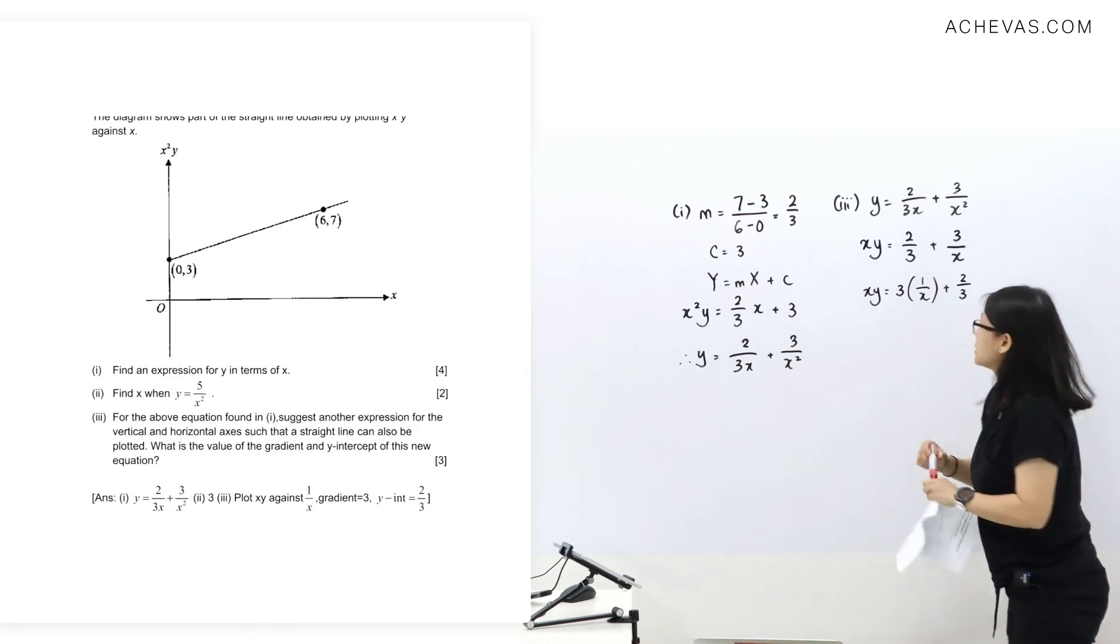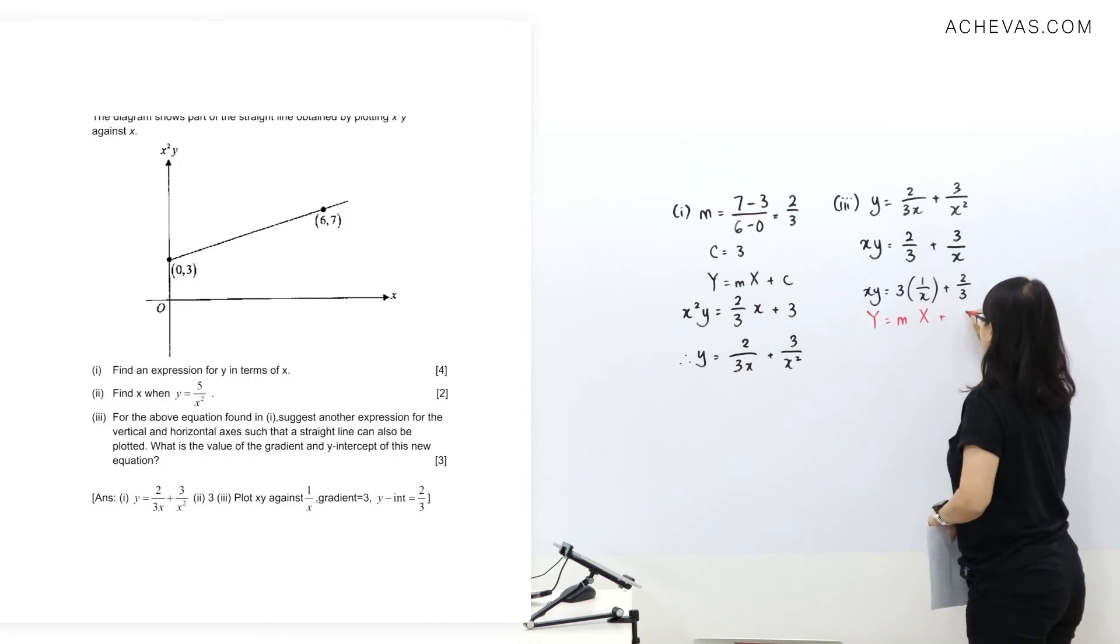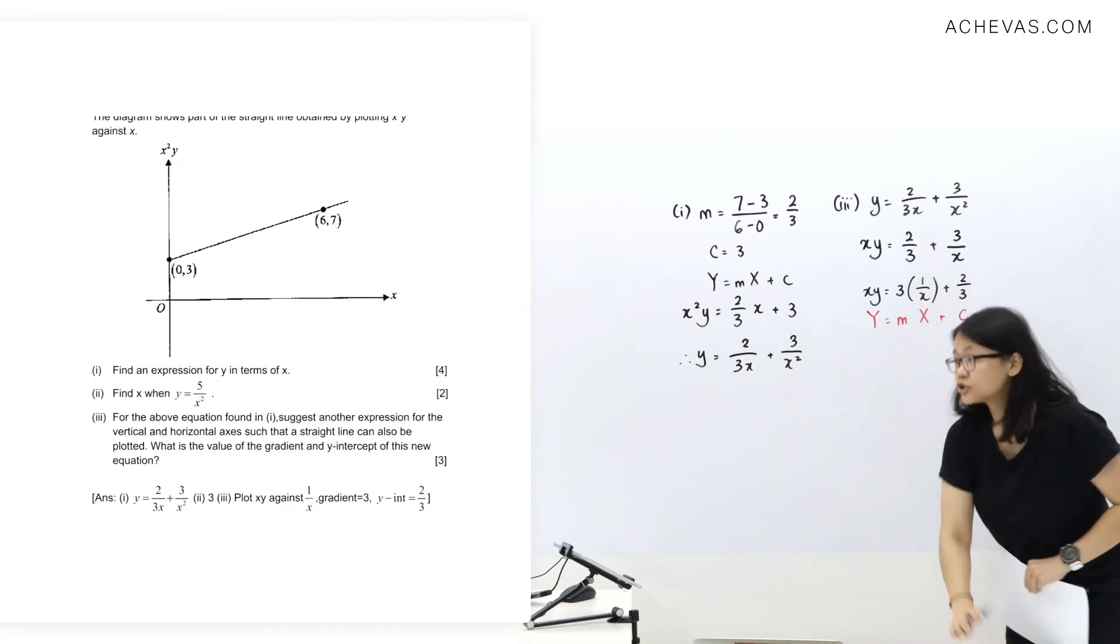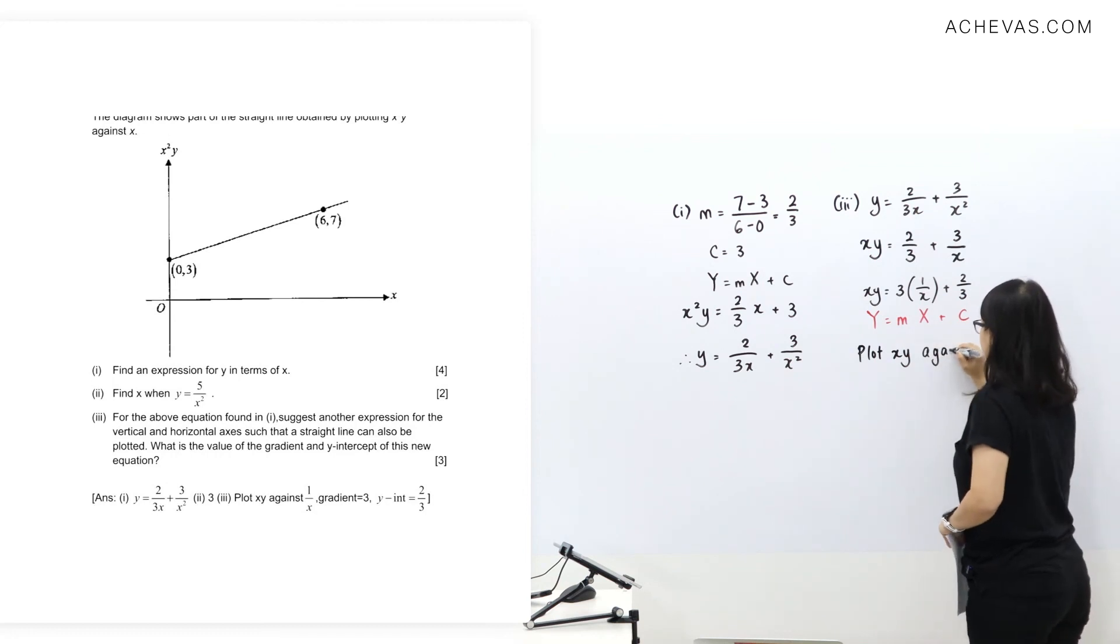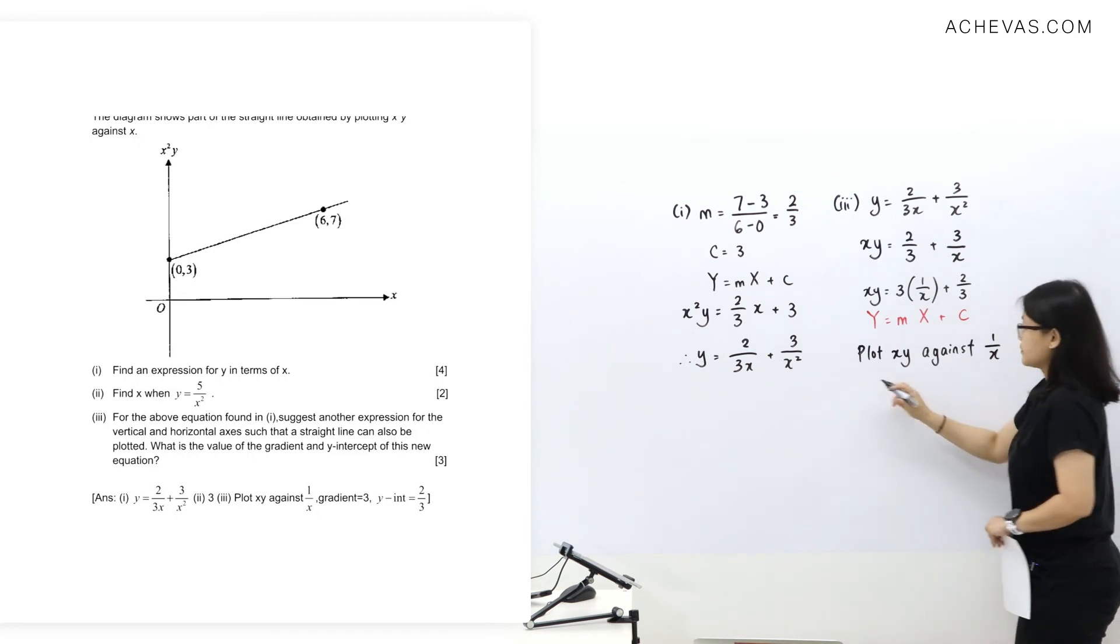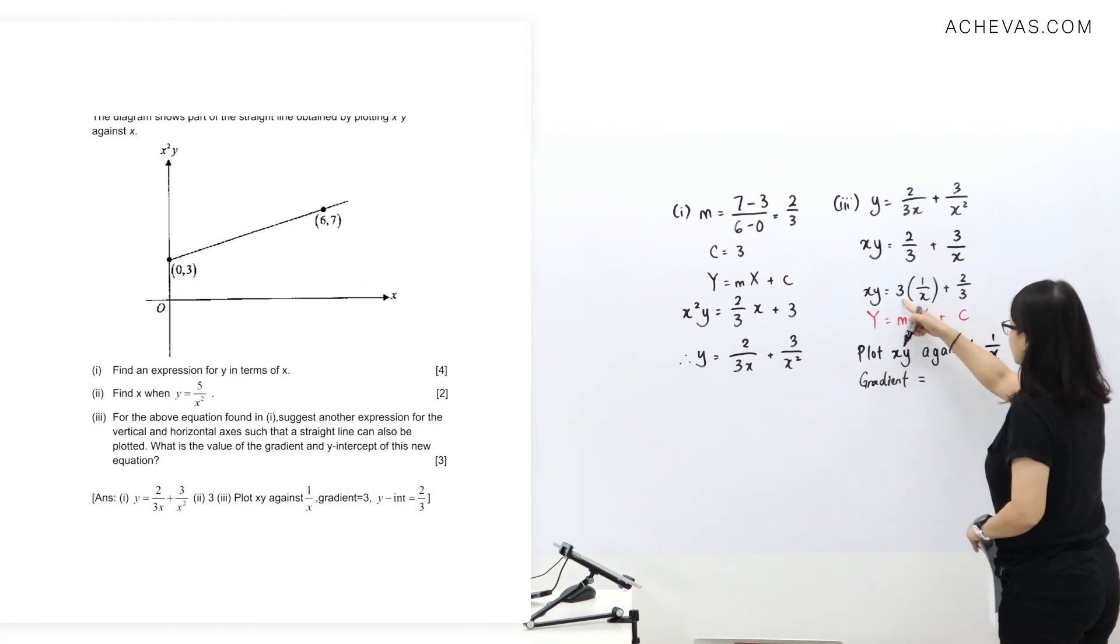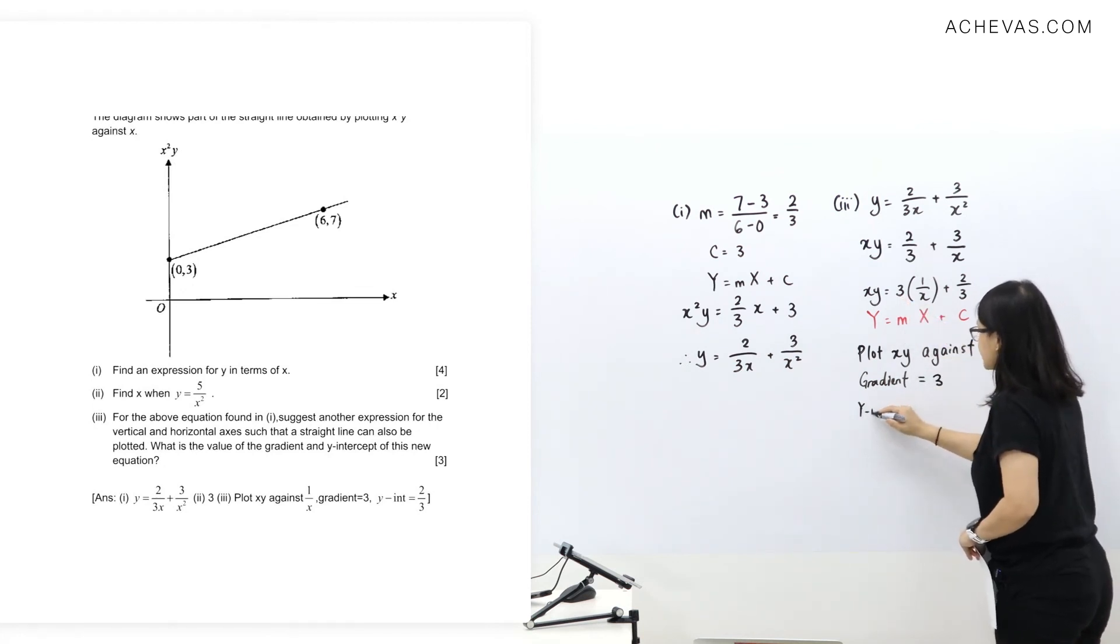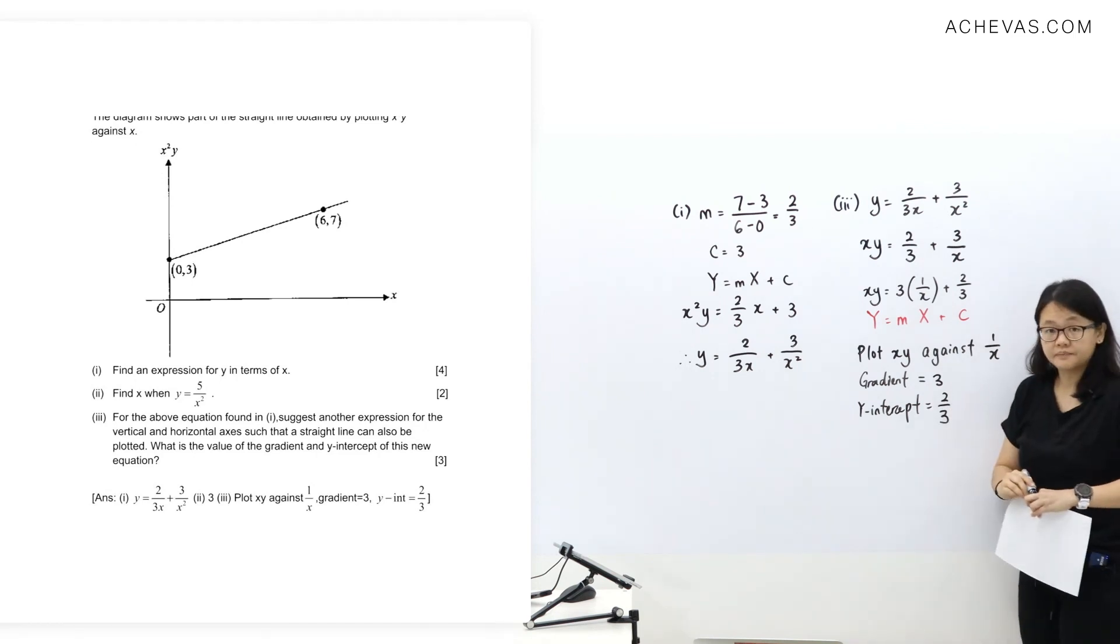So you will see that this will be capital Y equal mx plus c. So which means we are plotting this value xy against this value 1 over x. Where gradient will be this 3 and y-intercept will be this value 2 over 3.